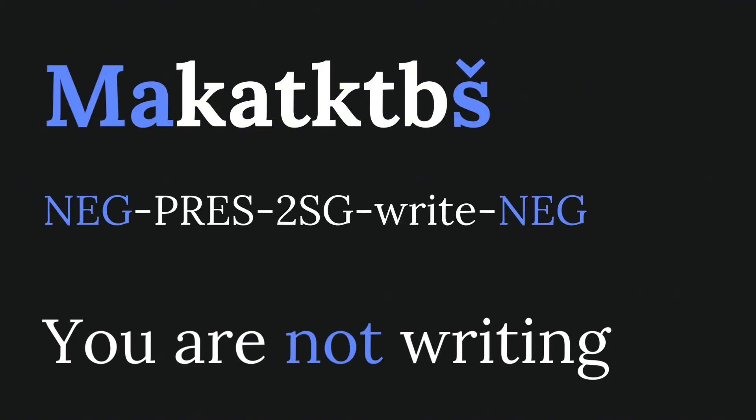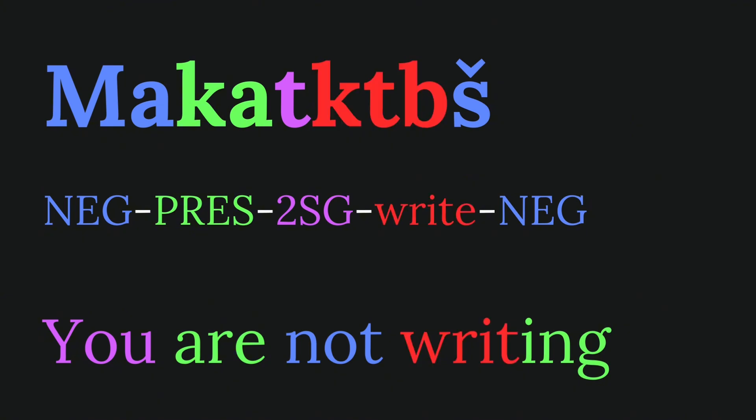We have ma and sha which convey negation, the prefix ska which is the present tense, the prefix t which is the second person singular, and the root qtib which means 'to write' — so we bring all that together and get maketik tibsh. See how glossing provides information about the actual structure of the language instead of just translating?